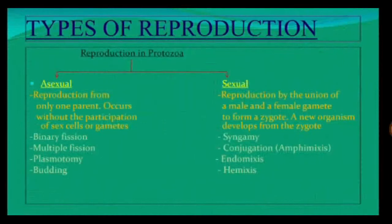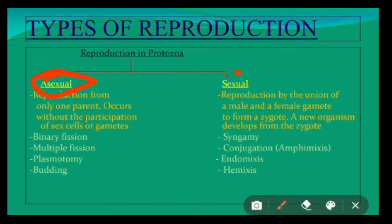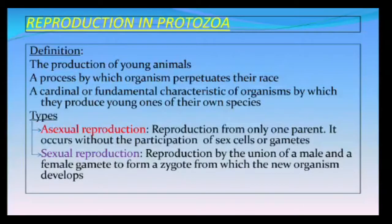Reproduction in protozoa can be classified into two types: asexual and sexual. Reproduction from only one parent, where no gametes are formed or fused, is called asexual reproduction. This asexual reproduction is of many types: binary fission, multiple fission, plasmotomy, and budding.